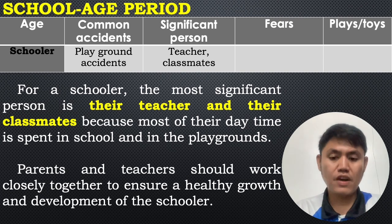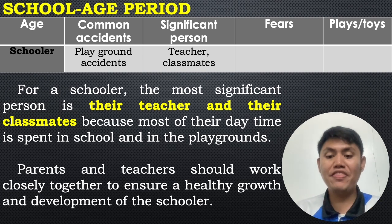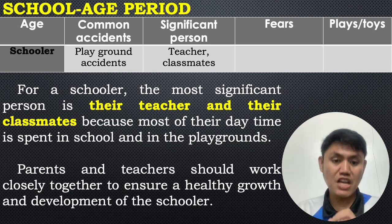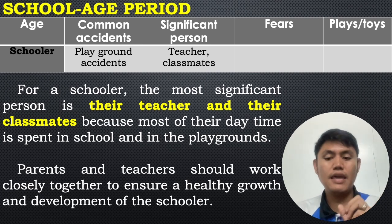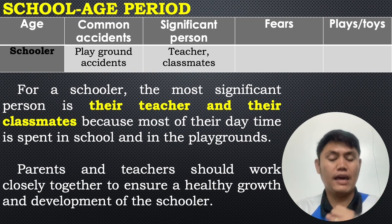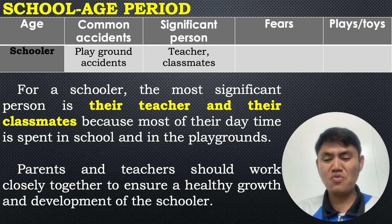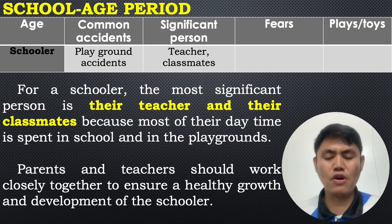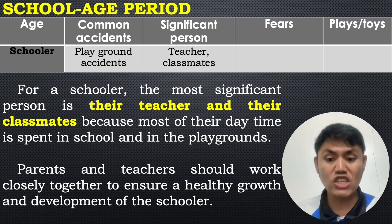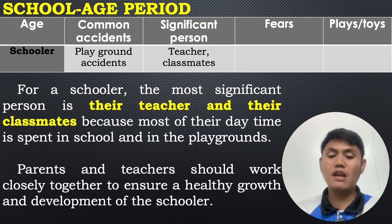For the school-age child, the most significant persons in their lives are their teachers and classmates, because they spend most of their waking hours in school. Parents and siblings are less prominent now because these children interact with their teachers and classmates more than with family members. There should be a partnership between teachers and parents to ensure healthy growth and development of the schooler and to create strong character and value formation in these kids, because it takes a village to raise a child.